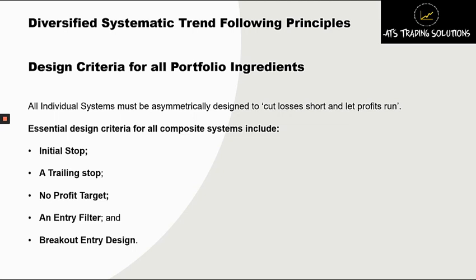We won't go into the exact reasons for that now — we'll do that at a later date — but when we are dealing with positively skewed systems, diversification actually adds some extra secret sauce, providing an additional edge over strategies that have negative skew. The third essential design criteria is for an entry filter, and the reason we use an entry filter is to avoid trading the trending condition during normal day-to-day conditions as opposed to more exotic or extreme market conditions where unidirectional price extensions are more prevalent and markets are less efficient or mean reverting in nature.